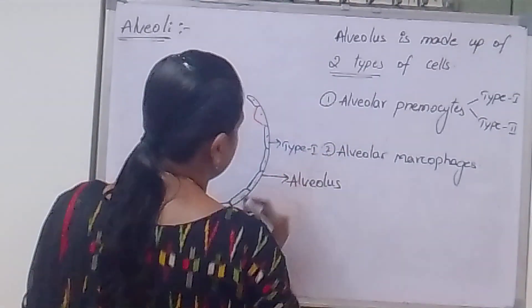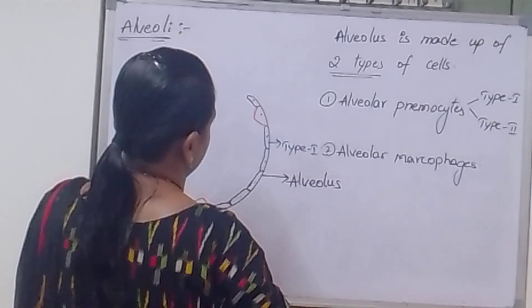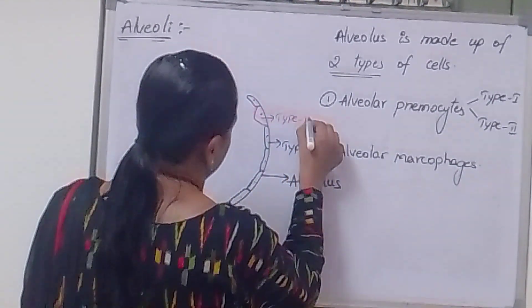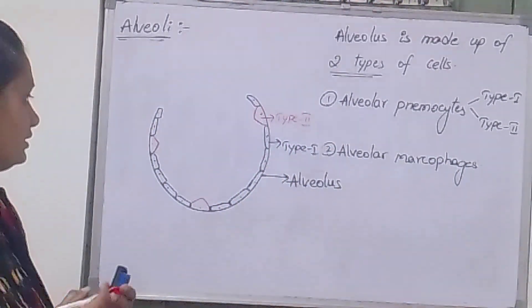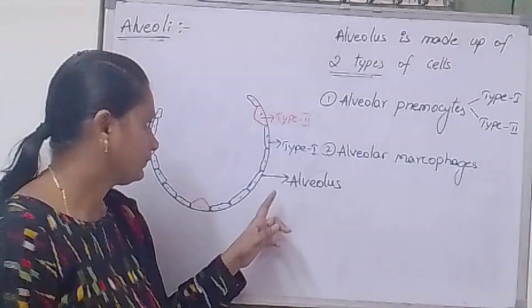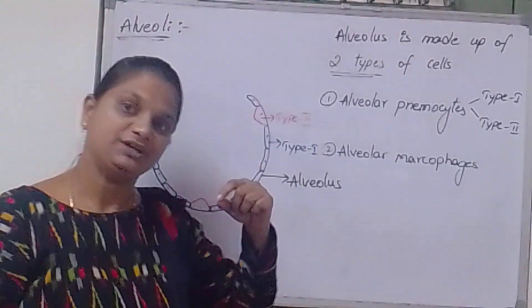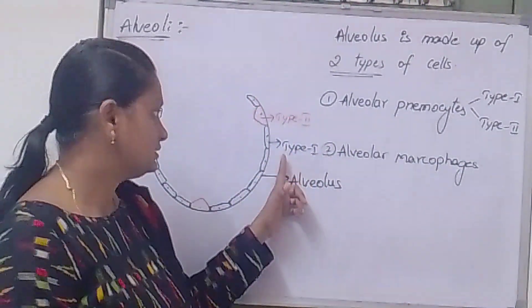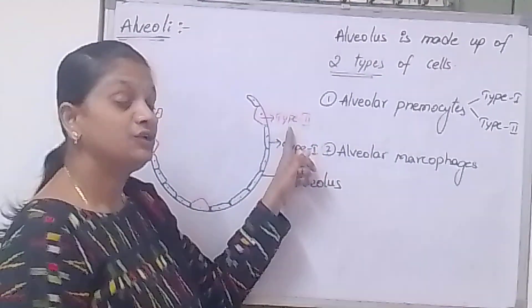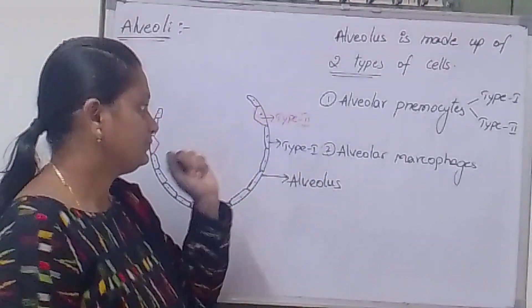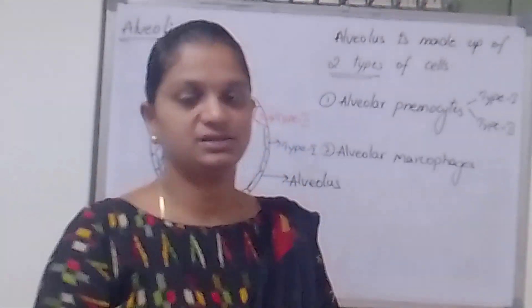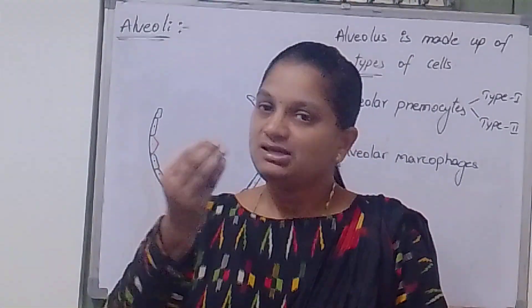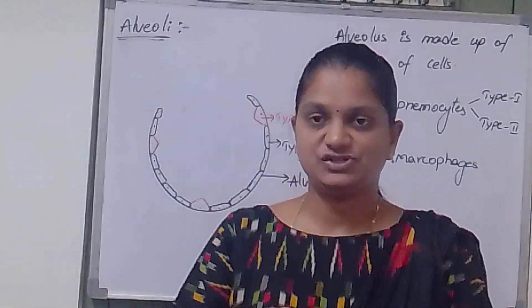These are Type 1 pneumocytes and Type 2 pneumocytes. Type 1 pneumocytes are flat squamous cells and Type 2 pneumocytes are cuboidal cells. Type 1 pneumocytes are the actual cells responsible for gaseous exchange.